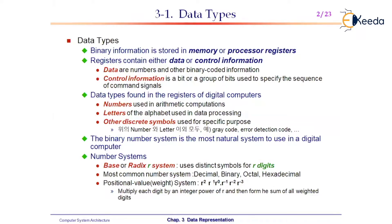We have two different locations within the computer system to store the data that is fed to it: one is memory, and the other is the processor's register.